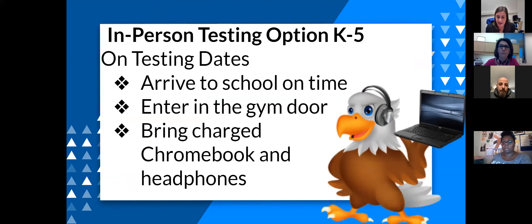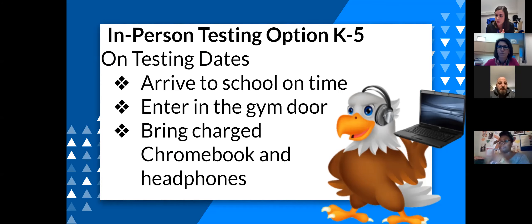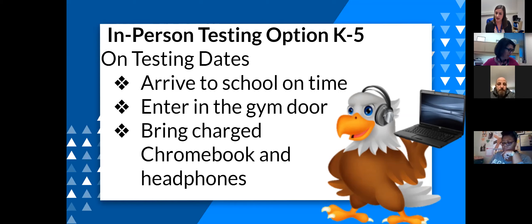The second option — which the school would really recommend if possible — is in-person testing for kindergarten through fifth grade. On the testing date, families would arrive at the school and enter through the gym door, just like during material pickups. Students won't be going into classrooms — they'll be in a separate space where staff will proctor the test. Families should bring their charged Chromebook and headphones. Students will test in the gym at student desks, socially distanced, following all safety procedures.